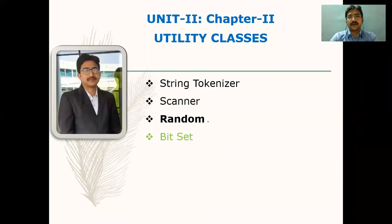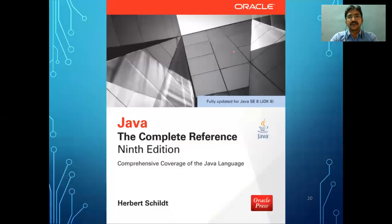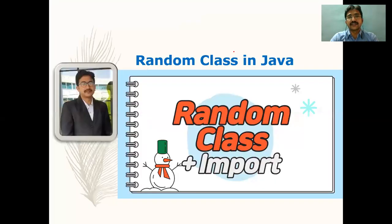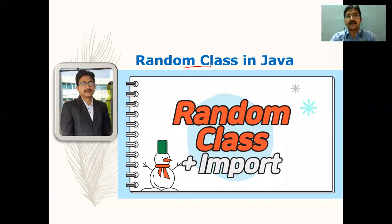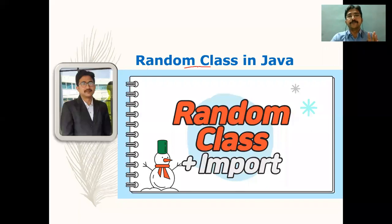In this class we are going to talk about one of the utility packages — the Random class. All the classes we have discussed are part of the utility class, that's why the chapter name is 'Utility Classes.' We are following the Java computer friends book and other sources. Coming to the actual topic, the Random class — random means picking up some values randomly, not in a continuation fashion, without any logic. It will not only pick odd, even, or prime numbers — it picks any values randomly.